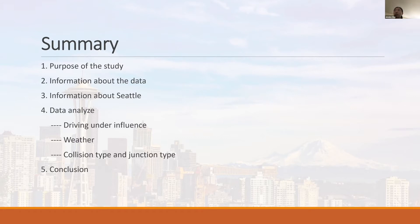In this presentation, we discuss the purpose of the study, information of the data, information about Seattle. Data will be analyzed in three aspects: driving under the influence, weather, collision type, and junction type, and the conclusion. Data tools — Tableau and R language — will be used in the analysis.